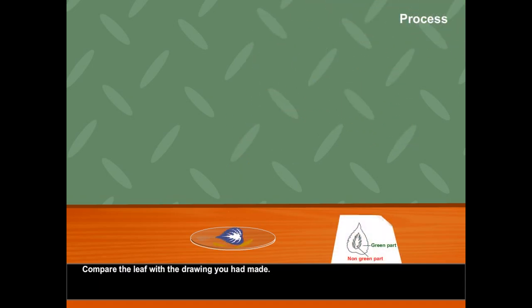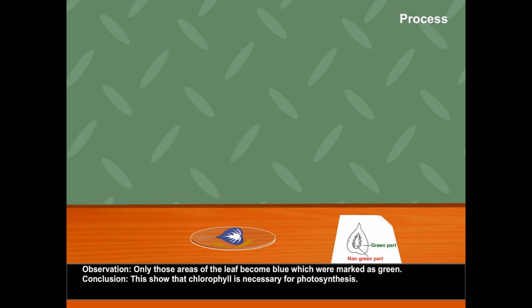Compare the leaf with the drawing you had made. Observation: Only those areas of the leaf become blue which were marked as green. Conclusion: This shows that chlorophyll is necessary for photosynthesis.